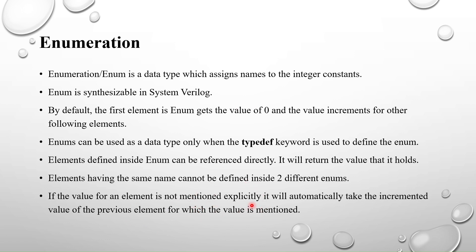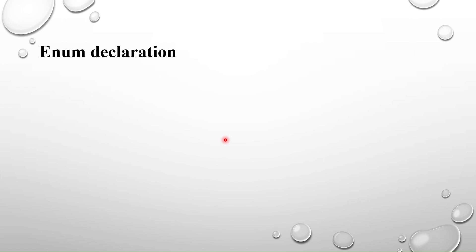If the value for an element is not mentioned explicitly, it will automatically take the incremented value of the previous element. For example, if you have three elements a, b, c and a is equal to five, then b will take six and c will take seven — five, six, seven — always incrementing from the previous value. We will see this in the examples.